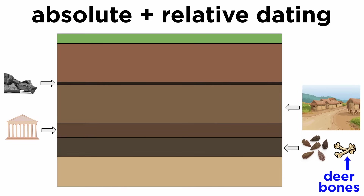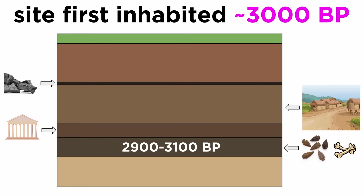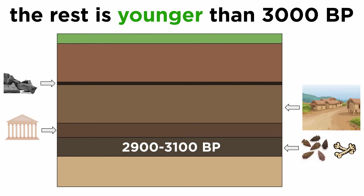This is where absolute dating methods can be combined with relative dating methods to make accurate and useful site chronologies. Since the deer bones are organic artifacts, radiocarbon dating can be used to give an actual date to the bones. We know the entire stratigraphic layer containing the deer bones is also that age. Let's say we were given a carbon dated range of 2900 to 3100 BP. We now know that our site was first inhabited around 3,000 years ago, and that by the law of superposition, the entire rest of the site is younger than 3,000 BP.